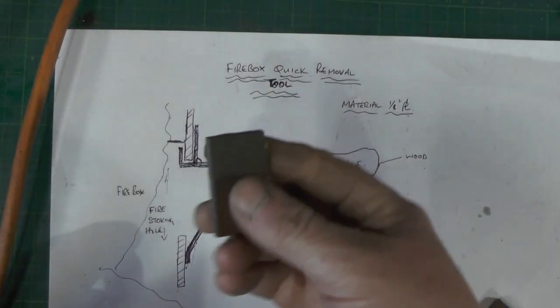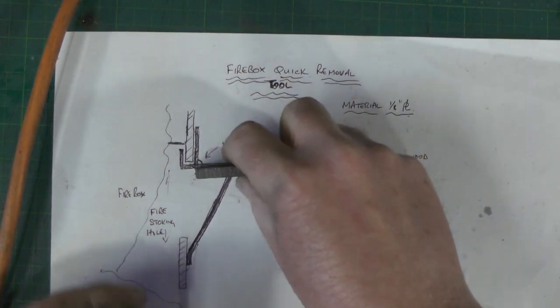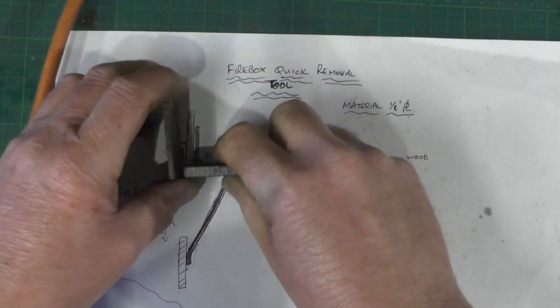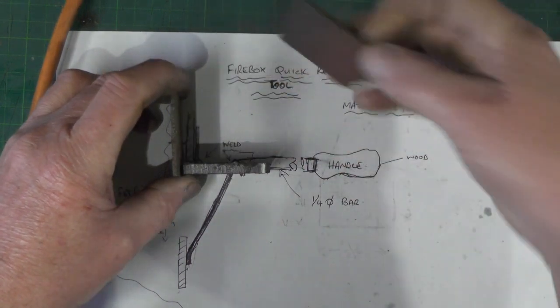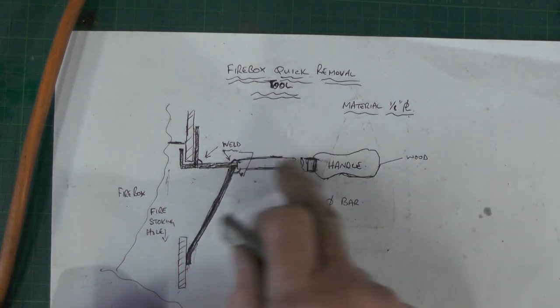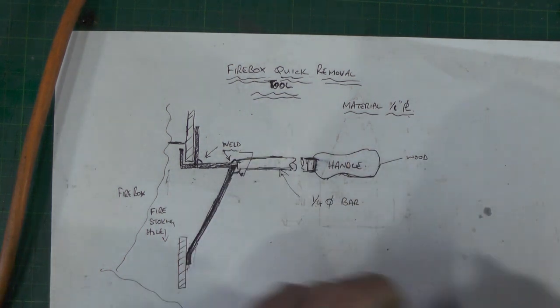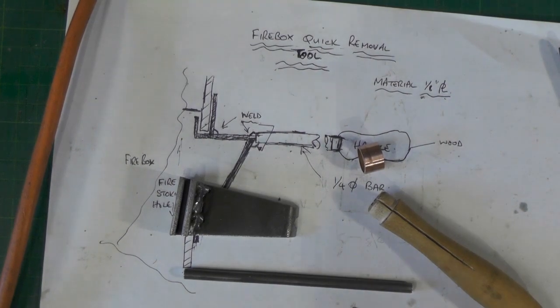Right, so I've found some off-cuts of plate that I've had lying around and what I'm going to do, I'm just going to make a tool to fit up there like that. I may have to put this leg on it, I'm not sure. And then weld a bit of bar on with the handle.